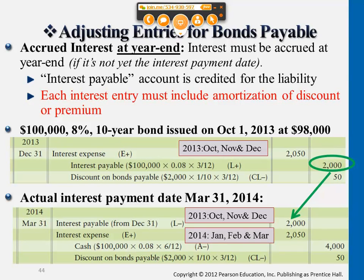What about the following year? Would it still be March 31st? It would be April 30th — if we push back a month, it's April 30th. The accounts are still the same — interest payable — but this part would only be for November and December. The second part will be for January, February, March, and April — four months. The cash part is the same; we're paying cash for six months.